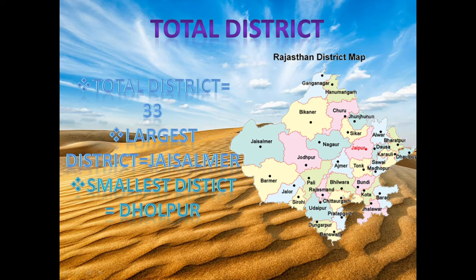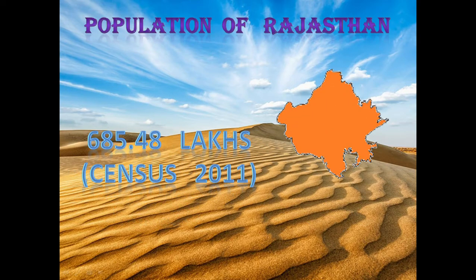The total number of districts in Rajasthan is 33. The largest district is Jaisalmer and the smallest district is Dholpur. The population of Rajasthan is 6 crore 85 lakh 48,000.